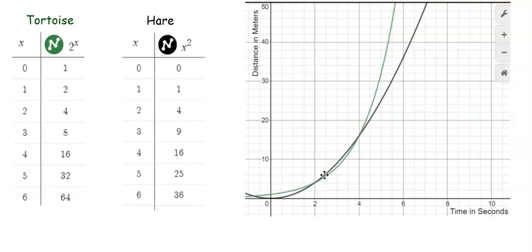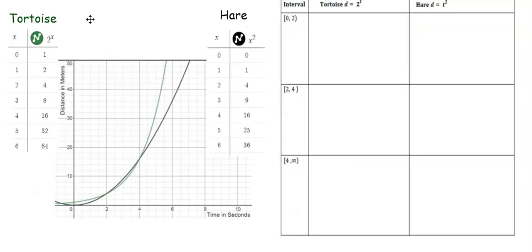The hare is going to be in the lead until the time is 4 seconds, where they are both at 16 meters. And then after 4 seconds, the tortoise stays in the lead. In this task, you're asked to compare average rates of change, so let's find some of these average rates of change to compare this quadratic model for the hare to this exponential model for the tortoise.